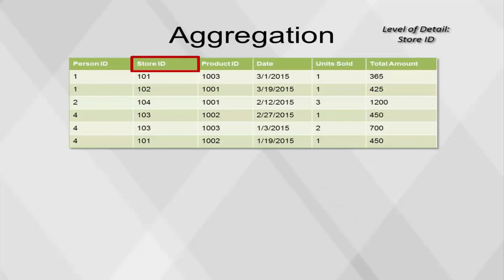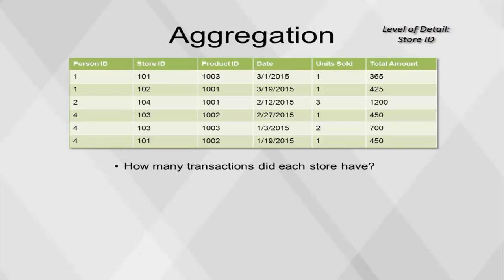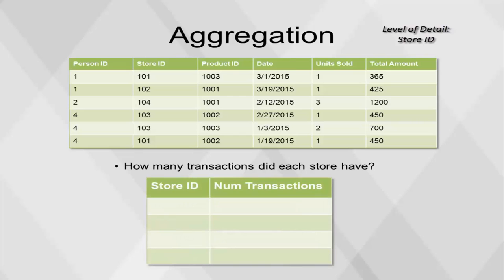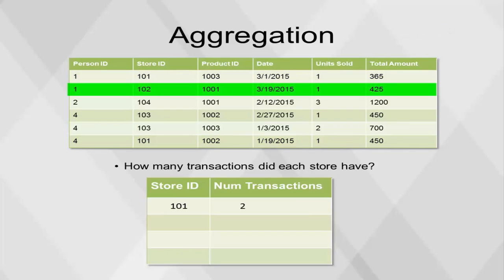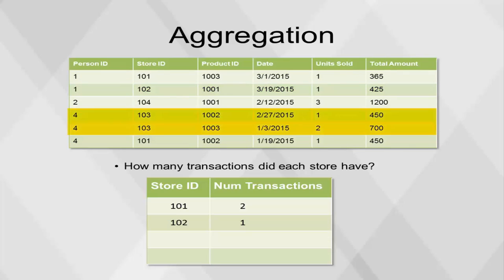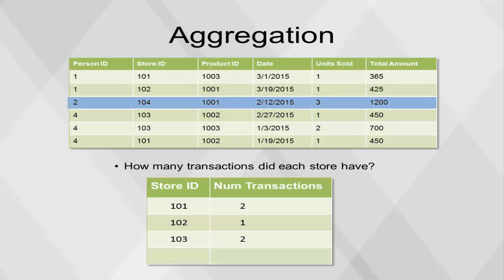Aggregating at the store level of detail can provide basic information about store performance. To find the number of transactions each store had, each occurrence of a store ID needs to be counted. Store ID 101 has two rows in the original table, indicating that there were two total transactions. Each store ID has its number of rows counted, and the final result is the num transactions column in the newly created table.